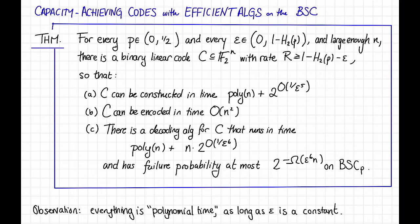However, if epsilon is not a constant, or if epsilon is just really small, these exponential dependencies are not particularly nice. But if epsilon is a constant, so everything in sight is polynomial time, then this theorem would be a big win. It says that there exist explicit codes that achieve capacity on the binary symmetric channel with efficient encoding and decoding algorithms. That's pretty cool.